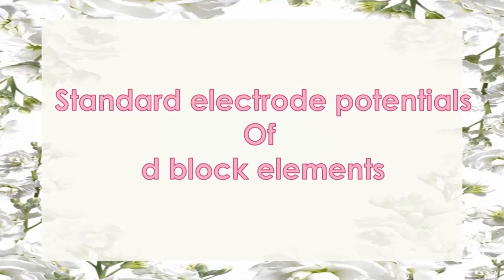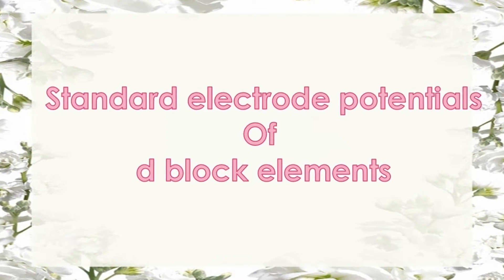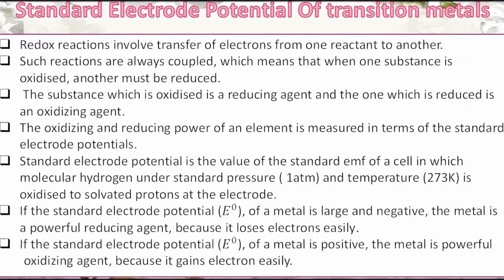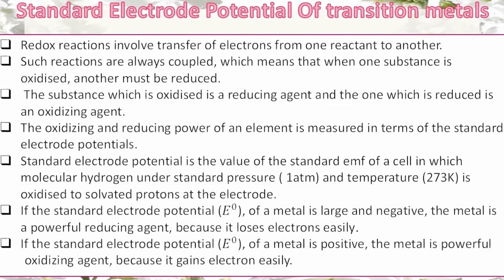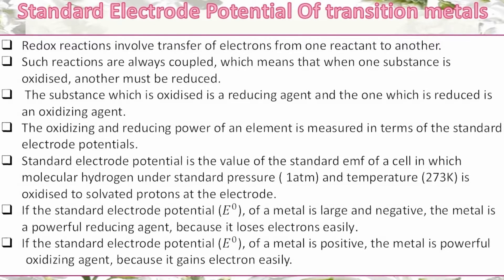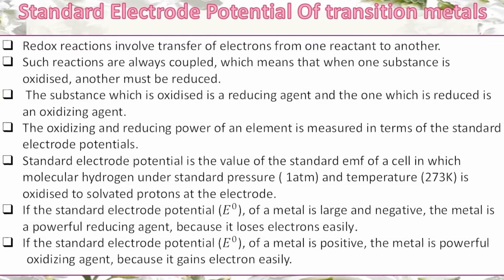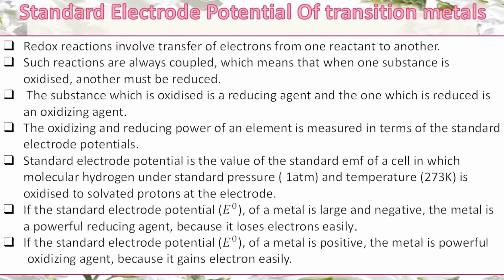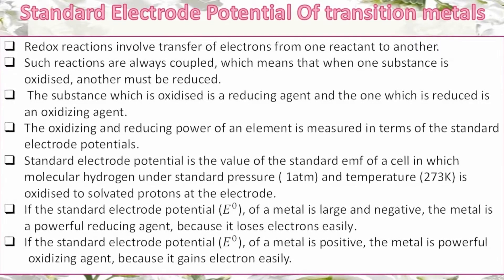Good morning students. Today we are going to discuss standard electrode potentials of D-block elements. In a redox reaction, one substance will be oxidized and another substance will be simultaneously reduced. The substance which is oxidized will be called a reducing agent and the substance which is reduced will be called an oxidizing agent.